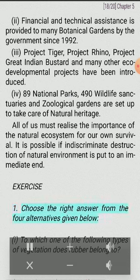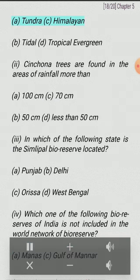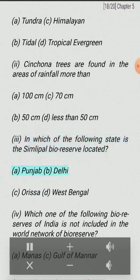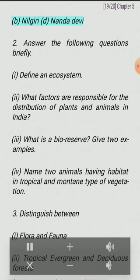Exercise: Choose the right answer from the four alternatives given below. (1) Which type of vegetation does rubber belong to? (A) Tundra, (B) Tidal, (C) Himalayan, (D) Tropical evergreen. (2) Cinchona trees are found in areas of rainfall more than: (A) 100 cm, (B) 50 cm, (C) 70 cm, (D) less than 50 cm. (3) In which of the following states is the Simlipal Bio-Reserve located? (A) Punjab, (B) Delhi, (C) Orissa, (D) West Bengal. (4) Which one of the following bio-reserves of India is not included in the World Network of Bio-Reserves? (A) Manas, (B) Nilgiri, (C) Gulf of Mannar, (D) Nandadevi.